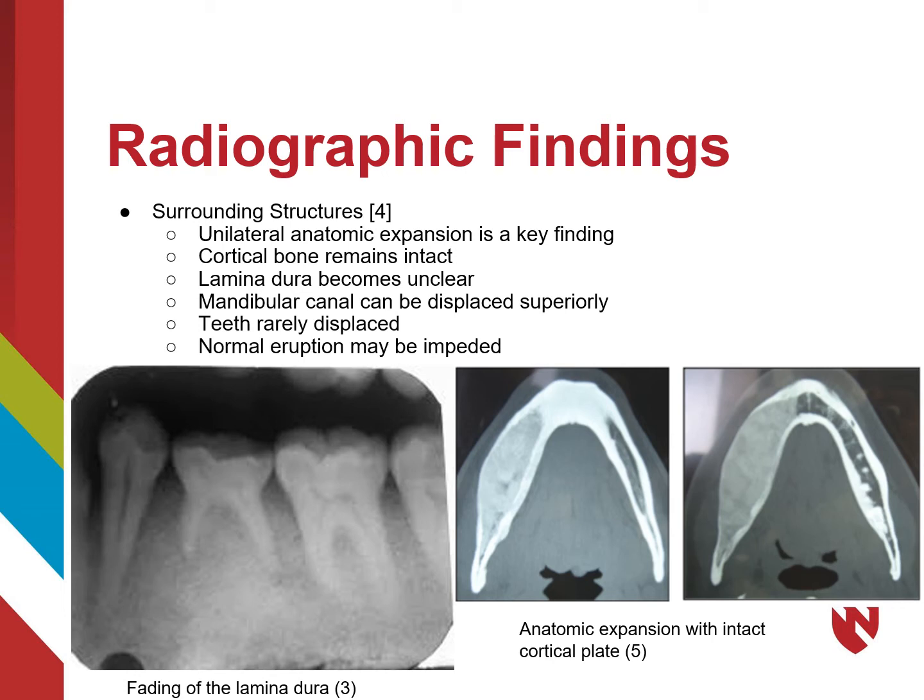Despite the anatomic expansion, we can see that the teeth are not displaced or resorbed. On the left periapical radiograph, we can see that there is no longer a clear, distinct lamina dura as it is blended into the fibrous dysplasia lesion. Fibrous dysplasia is a non-odontogenic lesion and can appear below the mandibular canal, which may superiorly displace the canal. Occasionally, we may see normal eruption impeded by fibrous dysplasia causing blockage or impaction of teeth.